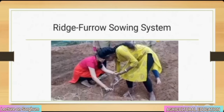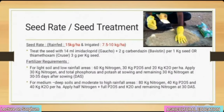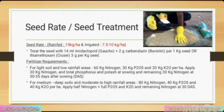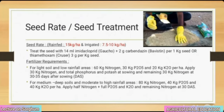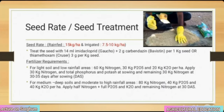Seed rate: rain-fed — 15 kg per hectare; irrigated — 7.5 to 10 kg per hectare. Treat the seed with 14 ml imidacloprid plus 2 g carbendazim per 1 kg of seed. Fertilizer requirements for light soil and low rainfall areas: 60 kg nitrogen, 30 kg P₂O₅ and 20 kg K₂O per hectare. Apply 30 kg nitrogen plus total phosphorus and potash at sowing and remaining 30 kg nitrogen at 30 to 35 days after sowing.